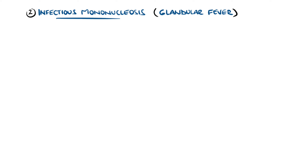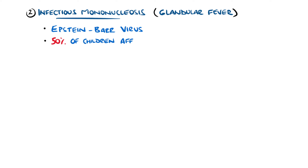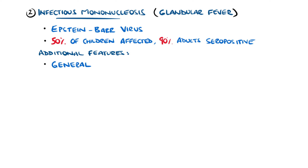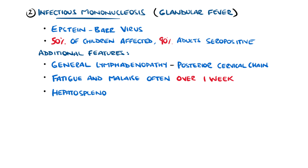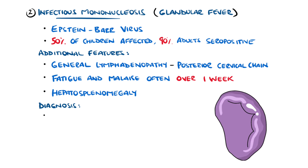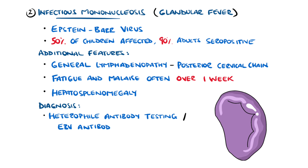Infectious mononucleosis, also known as glandular fever or kissing disease, is also a cause of sore throat, caused by the Epstein-Barr virus. 50% of children before the age of five will be affected, and 90% of adults are seropositive. This often features general lymphadenopathy including the posterior cervical chain, fatigue and malaise for over a week, and sometimes hepatosplenomegaly and jaundice.